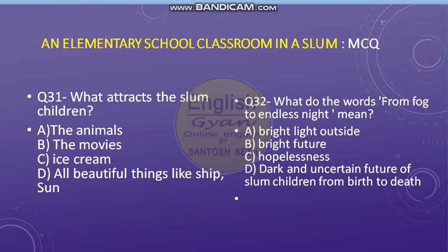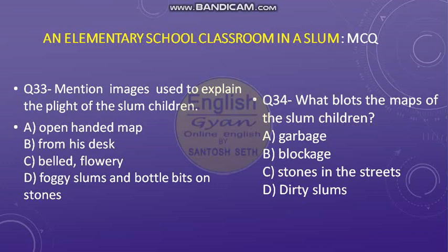Options for question 32: A — bright light outside, B — bright future, C — hopelessness, and D — dark and uncertain future of slum children from birth to death. Question number 33: Mention images used to explain the plight of the slum children. Options: A — open-handed map, B — from his desk, C — build flowery, and D — foggy slums and bottle bits on stones.